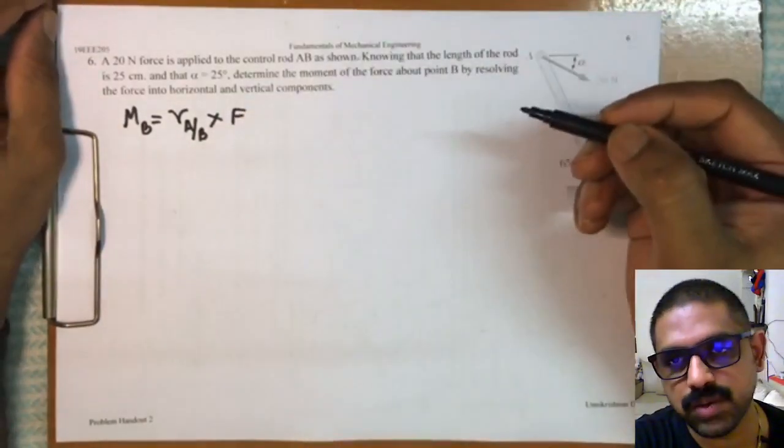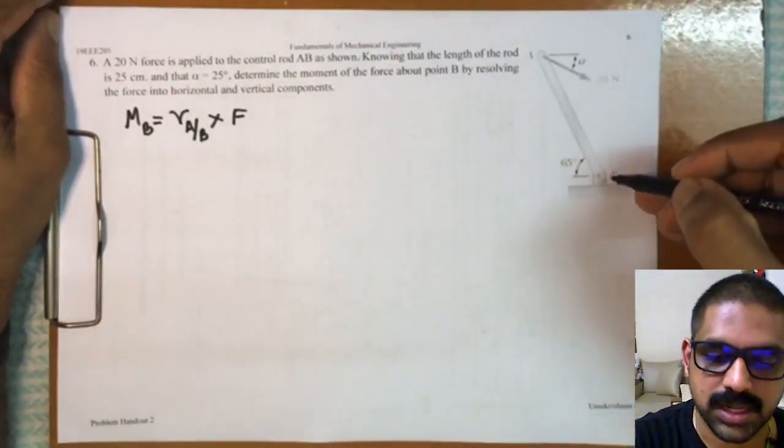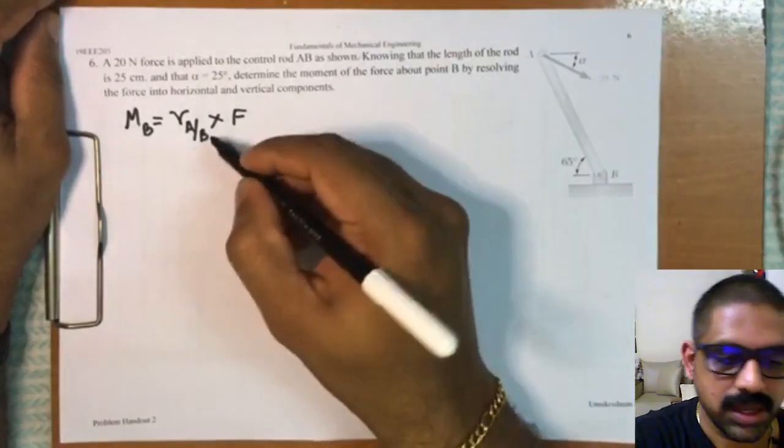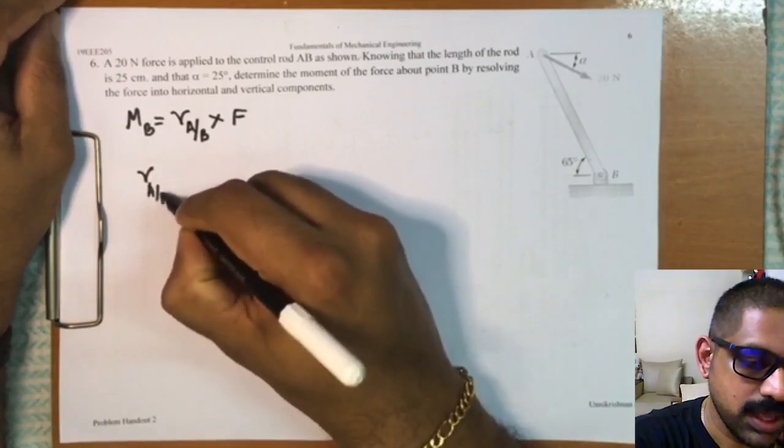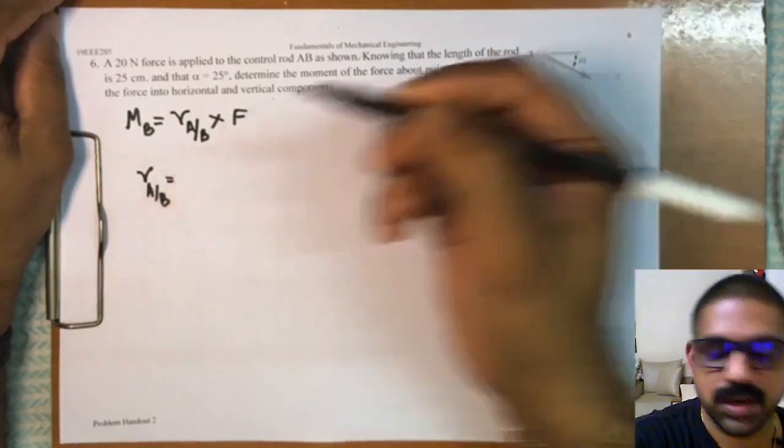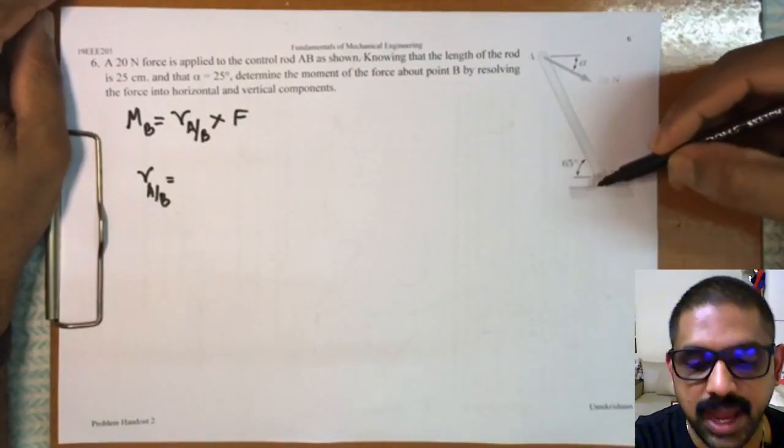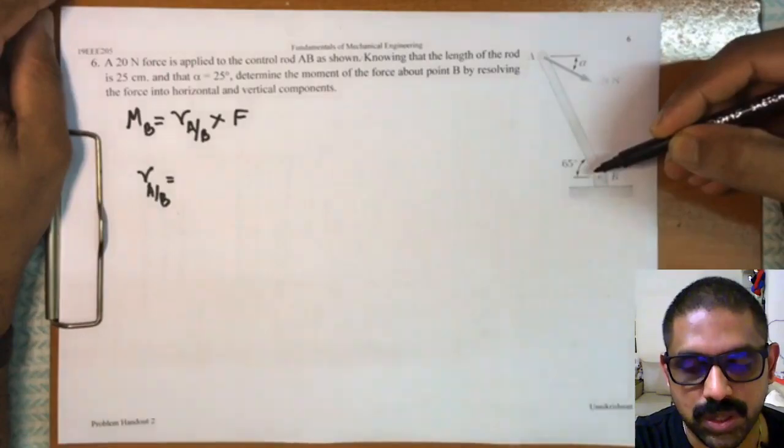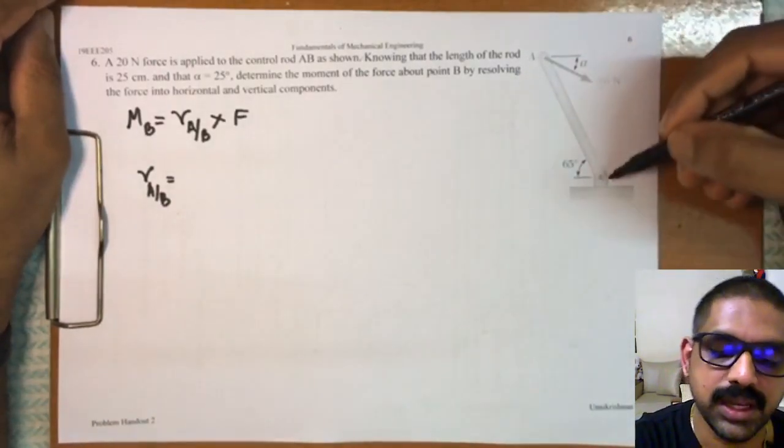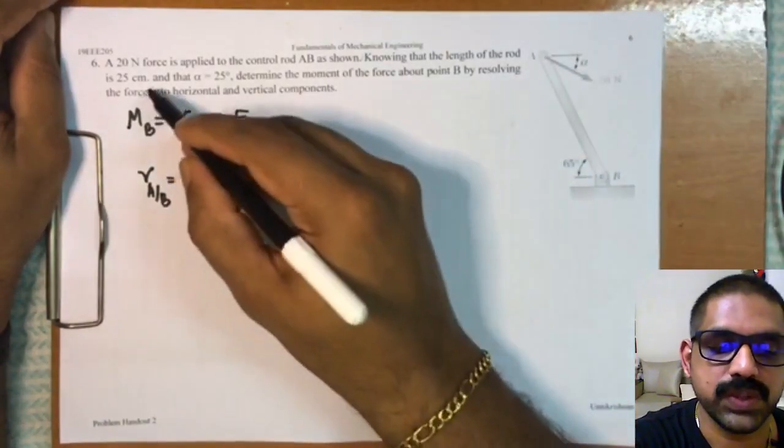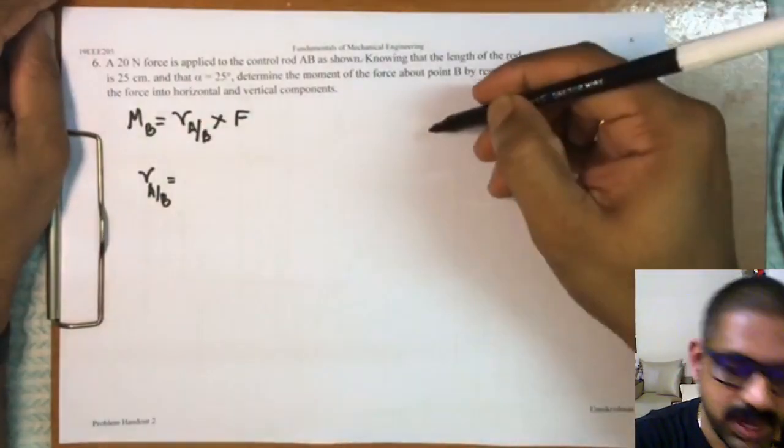Now it turns out to be just finding these two vectors. And let us consider here the vector r_AB first. So r_AB, here unlike the earlier problem, we have an angle given with respect to the horizontal, and it is given as 65 degrees, and the length of the rod is given to be 25 centimeters. So if I take the rod like this...